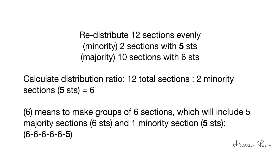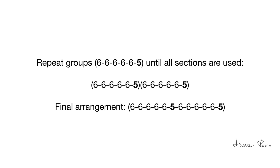Now we need to redistribute the 12 sections evenly. The minority sections have 5 stitches and the majority sections have 6 stitches. To calculate the distribution ratio we divide 12 total sections by 2 minority sections, and that equals 6. This number 6 means to make groups of 6 sections, which will include 5 majority sections and 1 minority section. We repeat these groups until all sections are used.